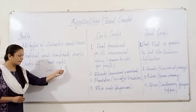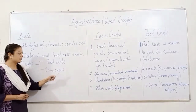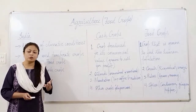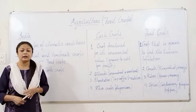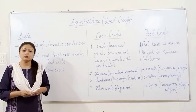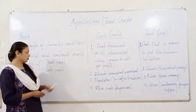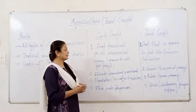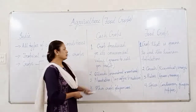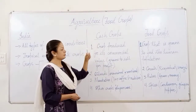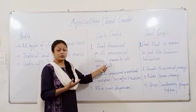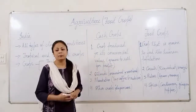What are food crops and what are cash crops? Let us understand this first, and then we will learn about the food crops grown in India, the regions where they are grown, and the methods used to cultivate them. Cash crops are produced for their commercial value. This means they are grown to sell for profit.